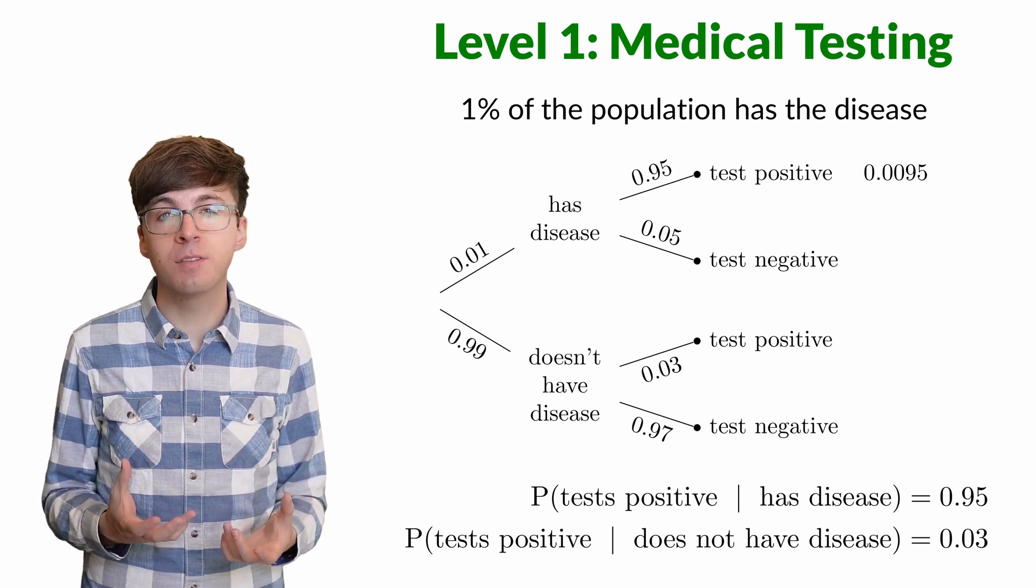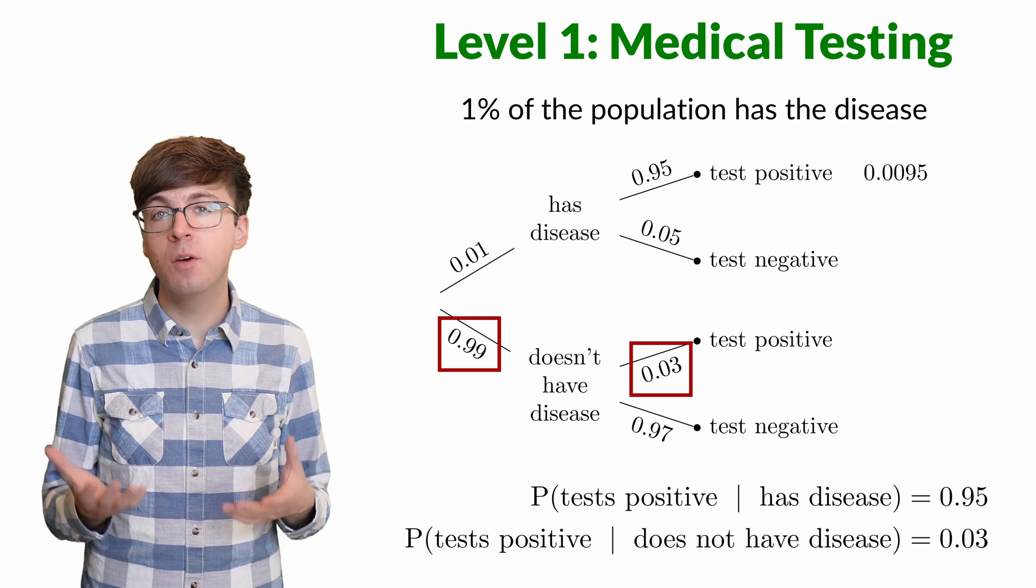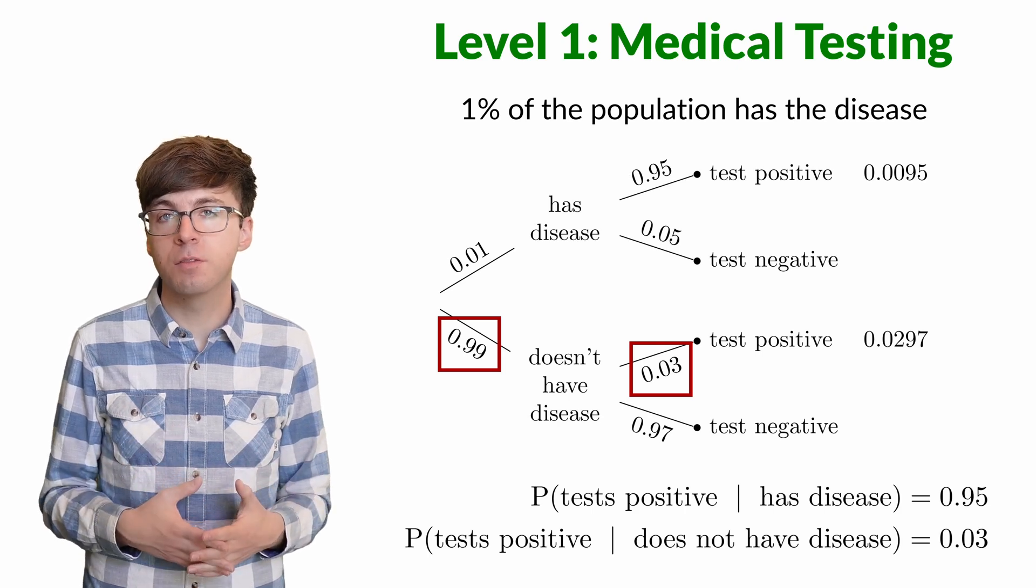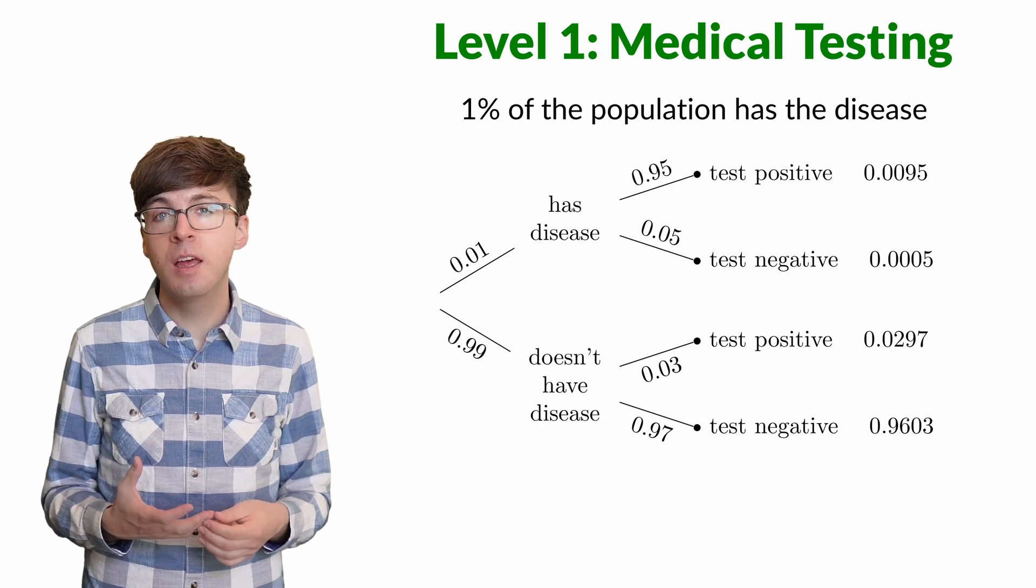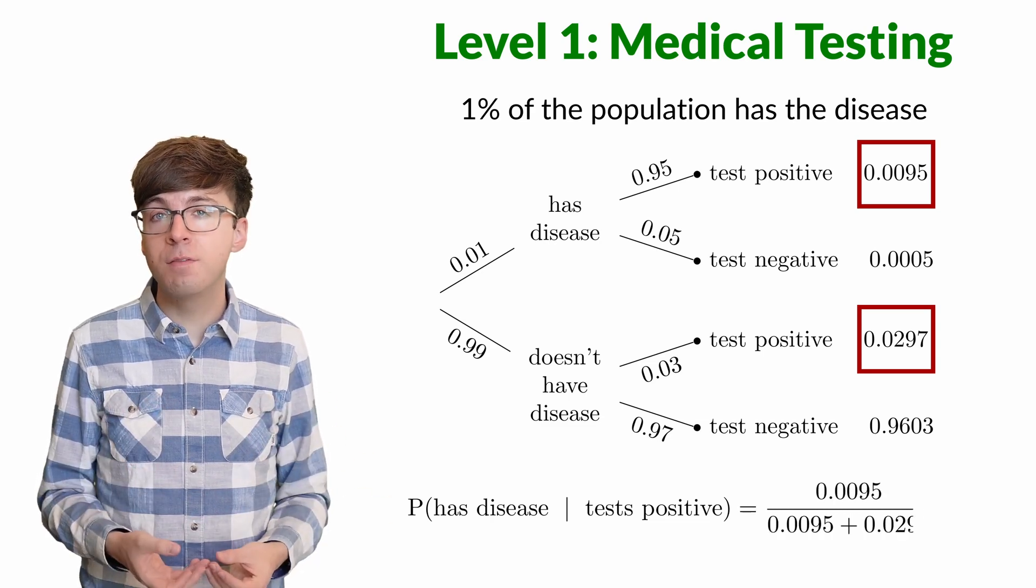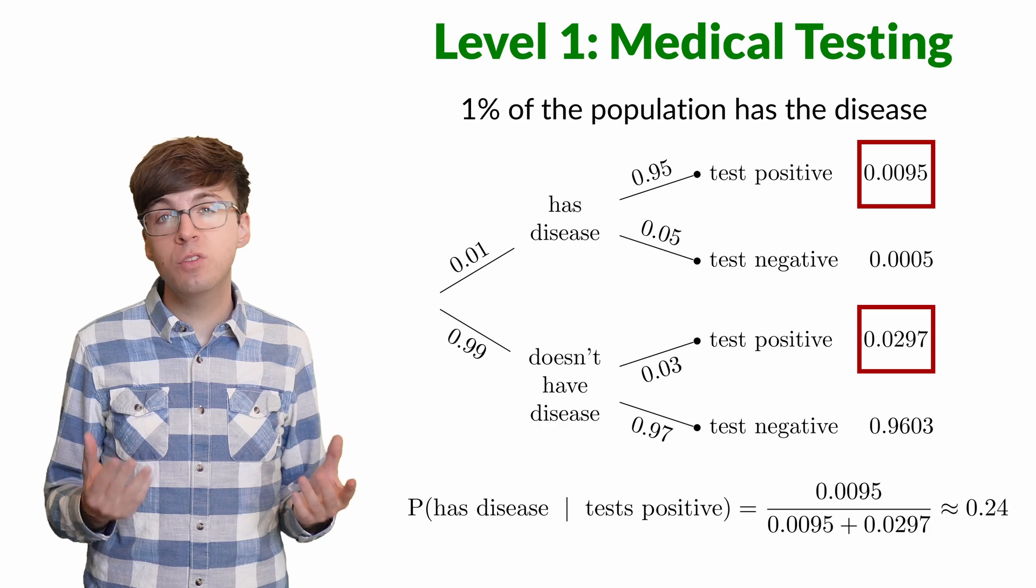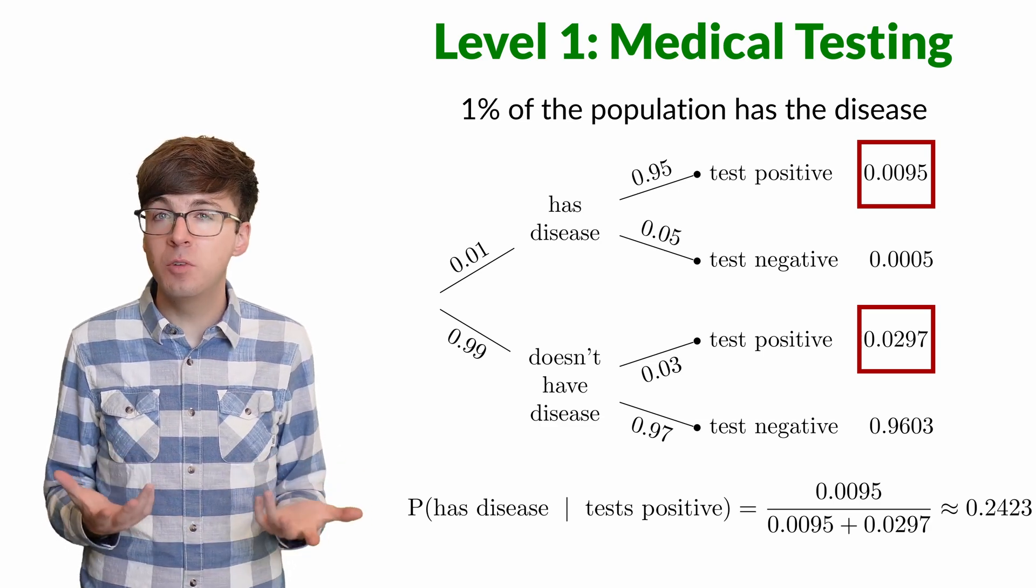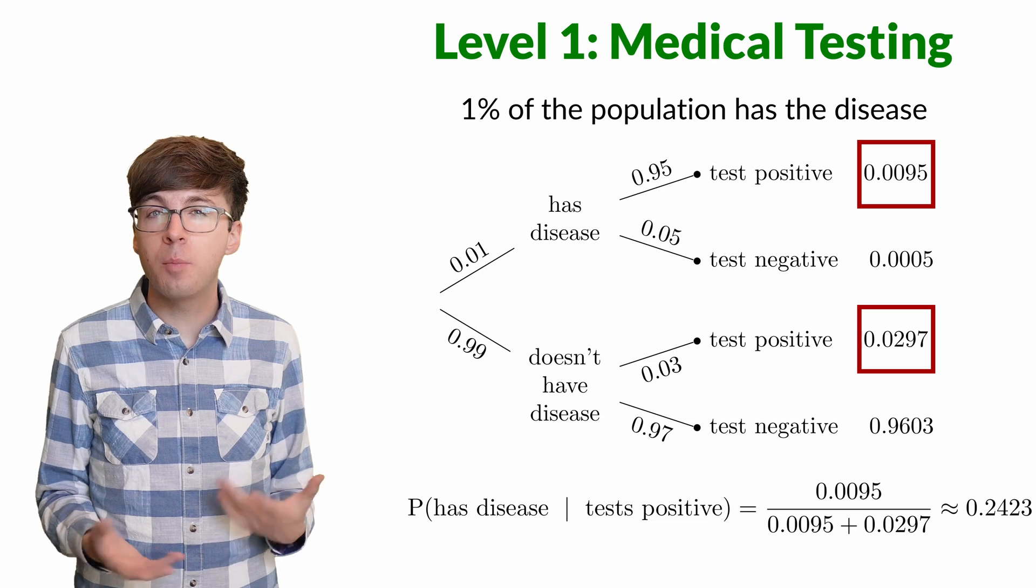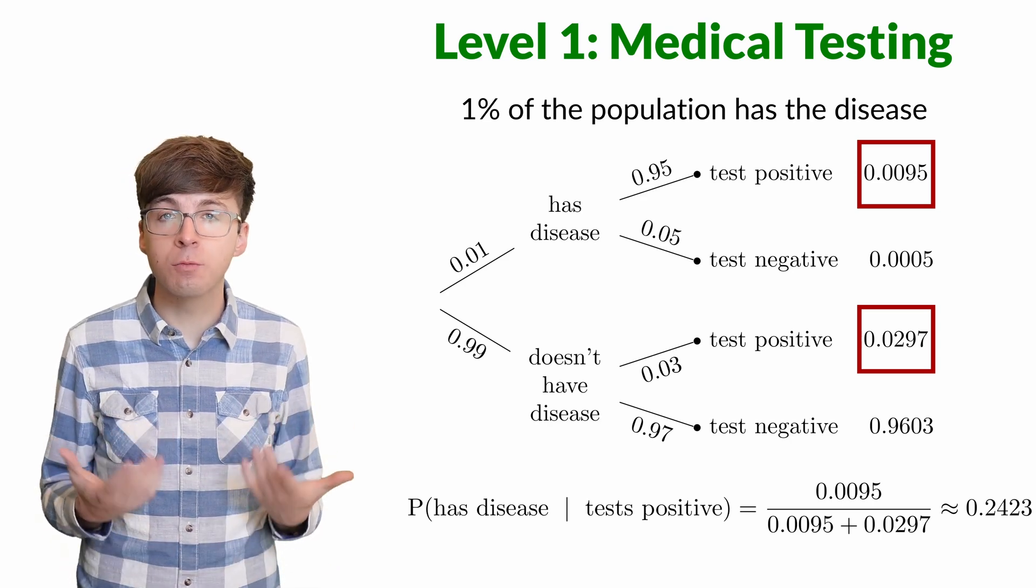But the test can also be a false positive. 99% of individuals do not have the disease, and 3% of those will have a positive test result. That's 2.97% of people who will have a false positive. If a randomly selected person tests positive for the disease, they're in one of these two branches. So the conditional probability of having the disease is 0.0095 divided by the sum of 0.0095 and 0.0297. That's about 24%. Even though this test seemed very accurate, since the disease is fairly rare in the population and the person was selected randomly, a positive test is most likely a false positive, and there's only about a 24% chance that the person really has the disease.